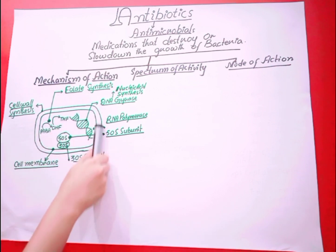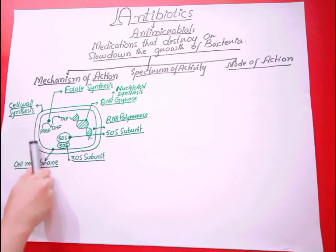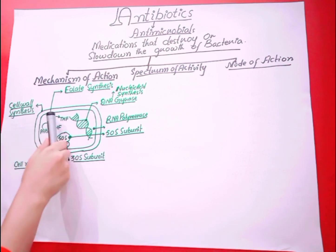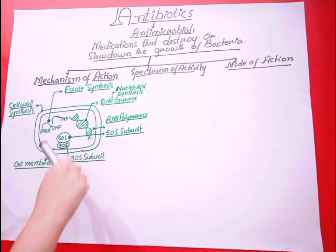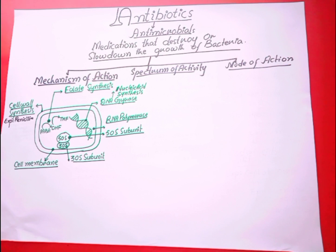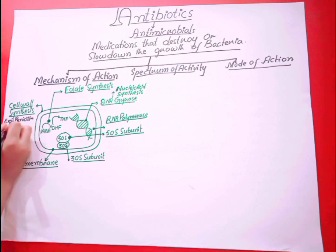Some antibiotics work by inhibiting cell wall production, making it difficult for bacteria to survive in the host body. Examples of antibiotics that inhibit bacterial cell wall production are penicillin, cephalosporin, bacitracin, and vancomycin.